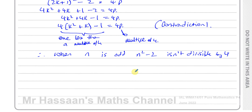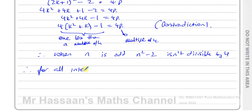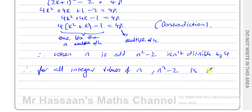Therefore, for all integer values of n, n squared minus 2 is never divisible by 4, whether n is even or odd. So that is the proof.